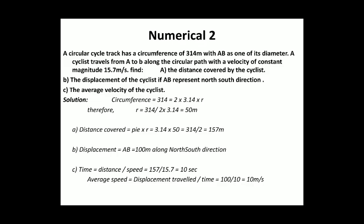Now, this is a different one. A circular cycle track has a circumference of 314 meter with AB as one of its diameter. A cyclist travels from A to B along the circular path with a velocity of constant magnitude 15.7 m/s. Find the distance covered by the cyclist. Very first thing, circumference is given. Just observe the mensuration of your maths. If the circumference is given, you can easily calculate R. So similarly in the very first step of the solution, circumference is equal to 314 equal to 2 into πR. Pi I have taken 3.14 because 314 is given. So R will be, on calculation R will be 50 meter.